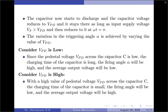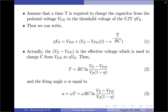Coming to the mathematical part: let us assume that a time T is required to charge the capacitor from the pedestal voltage Vpd to the threshold voltage of the UJT, η·Vz. We can write: η·Vz = Vpd + (Vz − Vpd) · (1 − e^(−T/RC)), where T is the time required to charge the capacitor from Vpd to η·Vz.